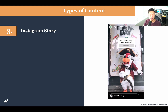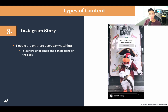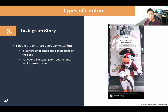Next up are Instagram Stories. If you're not familiar, you must be doing this — it's basically how people are consuming content on Instagram today. People watch every day; it's a live, unpolished, behind-the-scenes update of your favorite restaurant. It's short, unpolished, and can be done on the spot. Utilize functions like super zoom, boomerang, and rewind — these make it engaging. For example, instead of raw footage of someone popping a yolk, create a boomerang — footage that loops forward and backward for two seconds — which is very engaging.